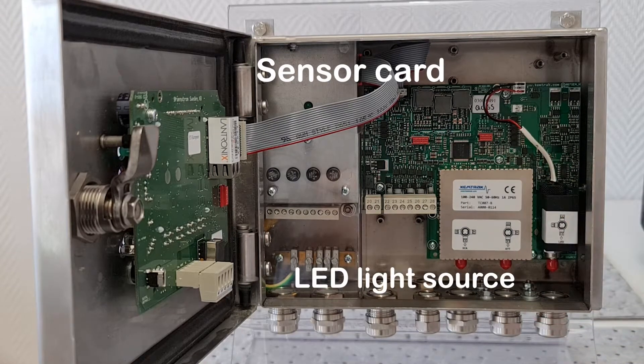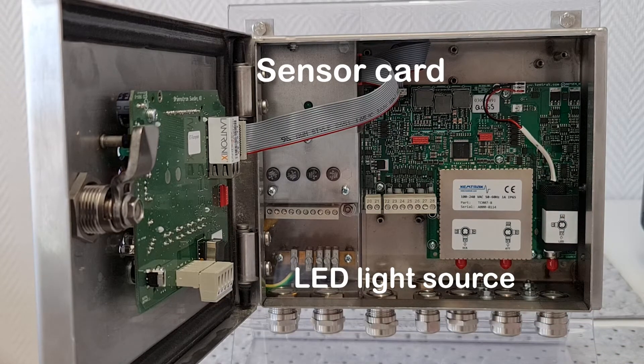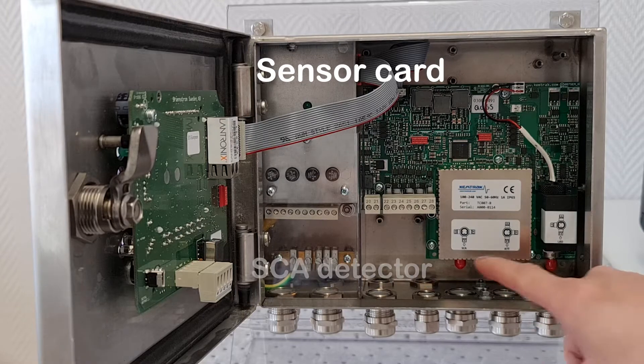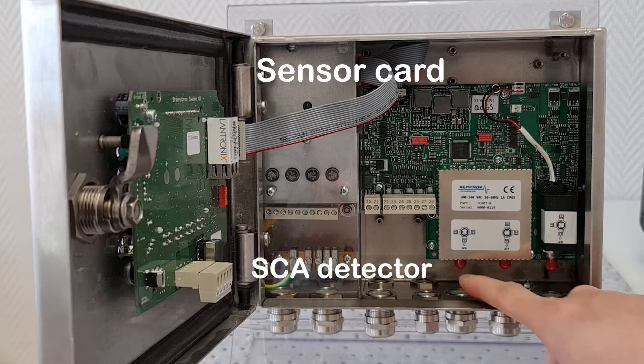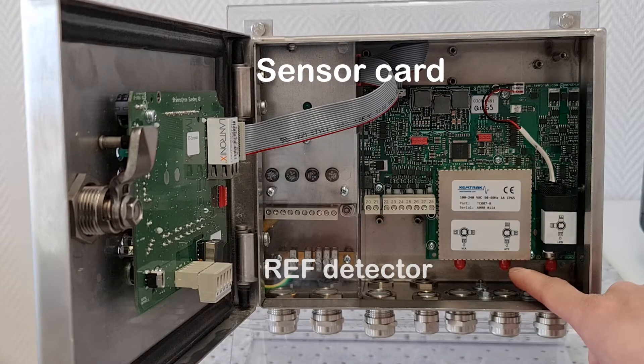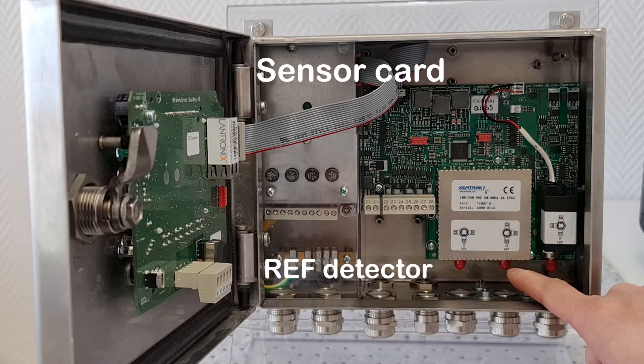The high performance LED light source is located to the right. There is one photodiode detector monitoring scattered light and a second reference detector that monitors attenuated light.